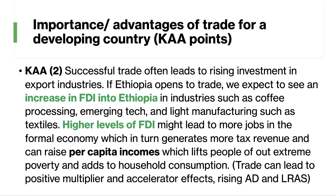My second point is that trade can be growth enhancing because it often leads to an increase in investment in export industries. We get AD = C + I + G + (X − M). So if Ethiopia opens their economy to trade, we expect to see an increase perhaps of foreign direct investment, FDI, into Ethiopia in industries such as coffee processing, emerging technology — maybe financial technology, software engineering — and also light manufacturing such as textiles. Trade encourages an inflow of investment. Higher levels of FDI might lead to more jobs in the formal economy, which in turn generates extra tax revenues and can therefore increase per capita incomes, which lifts people out of extreme poverty and adds to household consumption. So trade is a way of engineering an increase in per capita incomes and jobs.